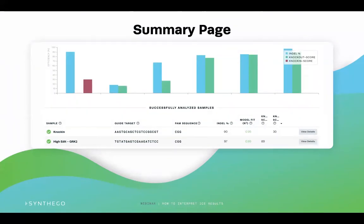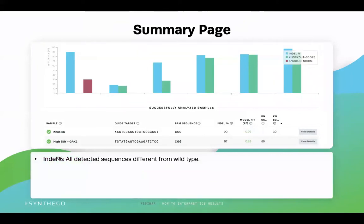The first screen after ICE analyzes the sequencing data from your samples will be the summary page seen here. You can see the list of all the samples uploaded to ICE below the bar graph. If you uploaded multiple samples, you can scroll through to find any given sample. As you place your mouse over a sample of interest, it will be highlighted in the bar graph above to display how that sample compares to other samples you uploaded. The blue bar represents the indel percentage, which is the percentage of sequences that contain some type of CRISPR edit in that sample. The indel percent includes all detected sequences that are different from the wild type — all insertions and deletions present in the samples — and gives a general indication of editing efficiency.